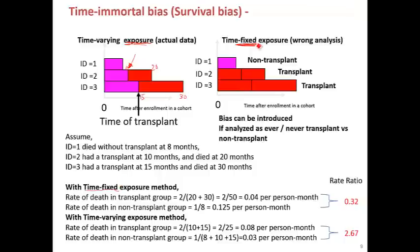For the time-fixed exposure method, you count all the red follow-up time for the transplant group, which adds up to 50. Two deaths occur in the transplant group, so the rate of death is 2 divided by 50, or 0.04 per person-month. For the non-transplant group, there is only one person who died after eight months, so the rate is 1 over 8, or 0.125 per person-month. The rate ratio becomes 0.32, indicating a 68% risk reduction of death by transplant.